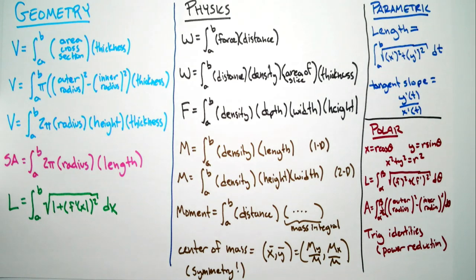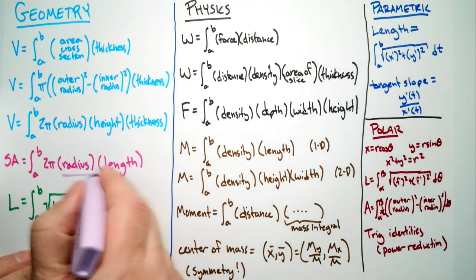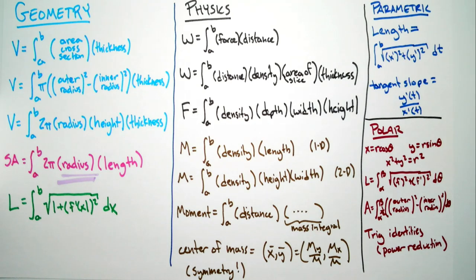You have surface area. If you memorize it this way, it's very flexible: integral a to b, 2π times radius times length. The radius is from the curve to where you're spinning around. Be careful — radius is a measurement, so it should always be positive. Make sure when you set up your radius it's a positive value. If you get a negative answer for volume, surface area, or length, don't just circle it — you've made a mistake. You've been given a gift, a chance to go back and correct it.